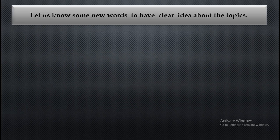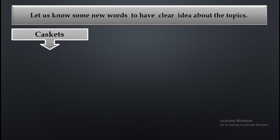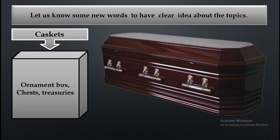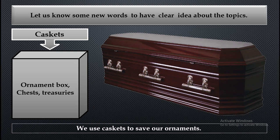Before going to the text, let us know some new words to have a clear idea about the topic. The first one: casket. The casket looks like a box — an ornament box, or treasury. We can use caskets to save our ornaments.